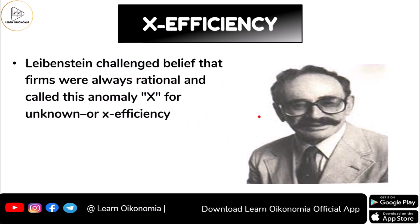This is where the role of Harvey Leibenstein comes in. He was challenging the idea that firms would always be rational. As far as firms are concerned, being rational means they maximize their profit. Leibenstein was challenging the belief that firms always maximize their profit, and this is something he called x-efficiency.